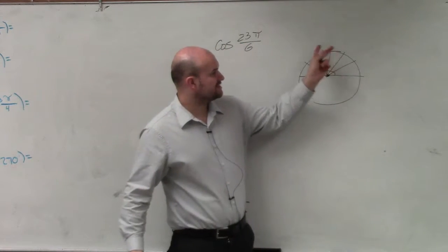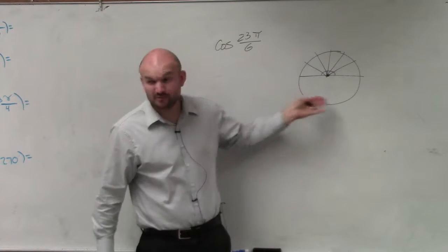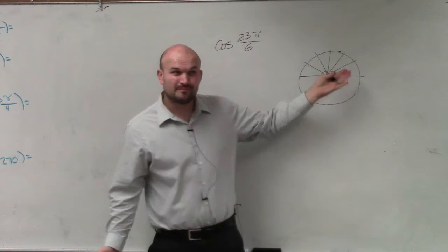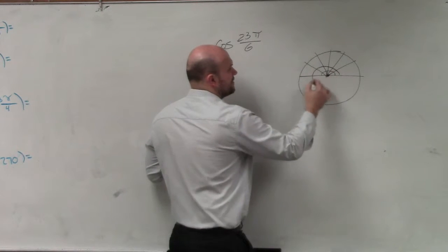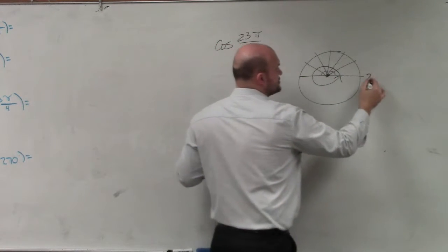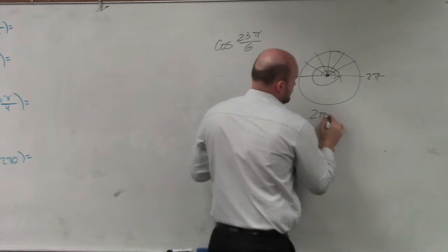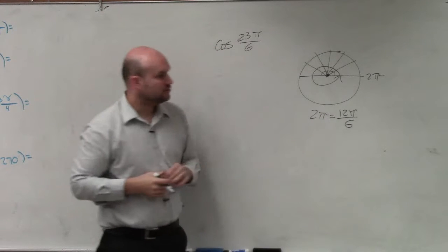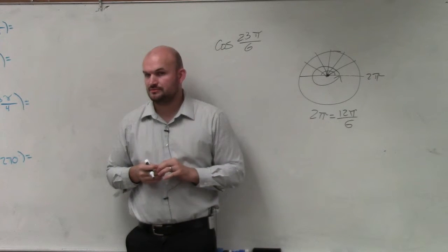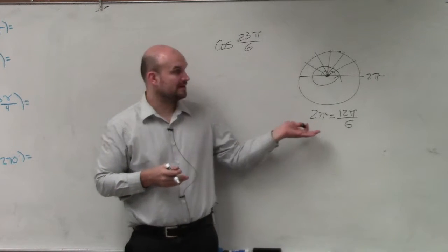Right? 1/6, 2/6, 3/6, 4/6, 5/6, 6/6. We could do the bottom and keep on counting all the way to 23 if we wanted to, but that's a little bit more work than we need to. We know that all the way around a circle is 2π, which is equal to 12π over 6. All the way around the circle is 2π or 12π over 6.